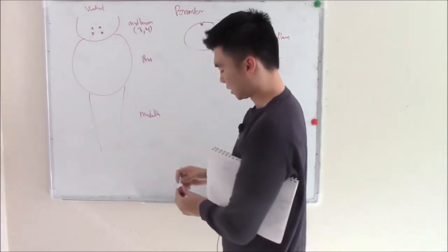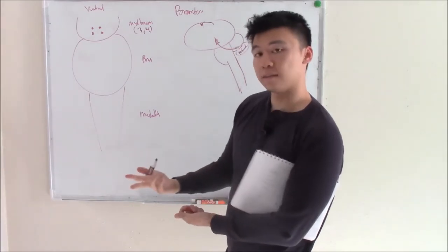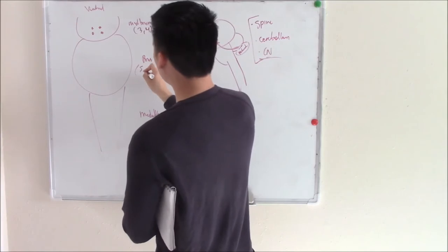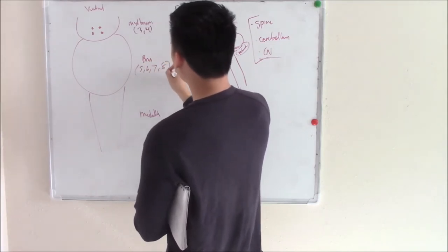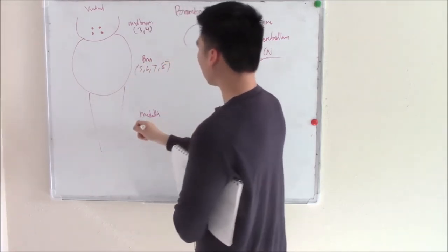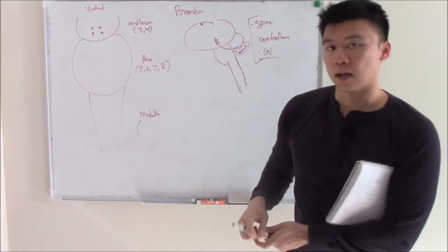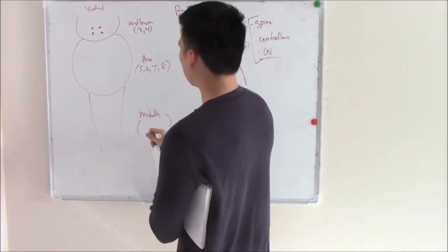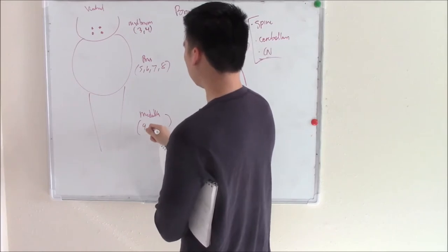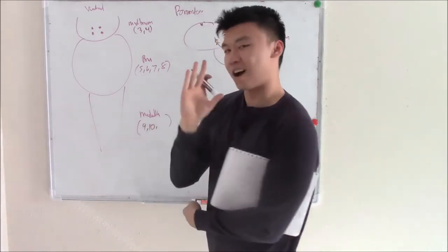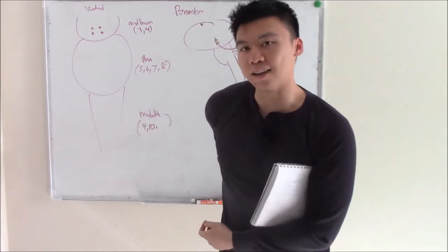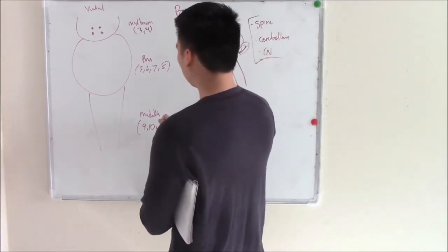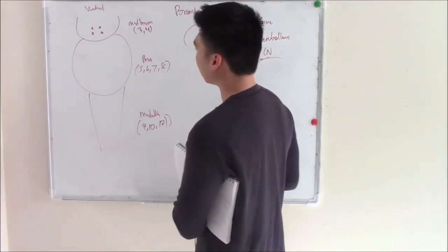The pons contains the next four — cranial nerves five, six, seven, and eight — and those nuclei are all here. The medulla has the last four cranial nerves and their nuclei also have to be here: nine, ten, and twelve. Not eleven — eleven stems from the spine. Eleven is your spinal accessory nerve. So nine, ten, and twelve. These are where your nuclei are.